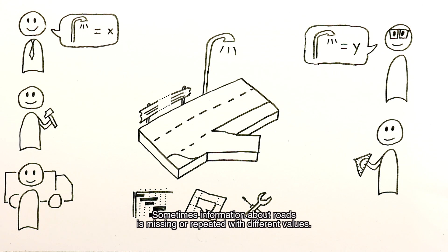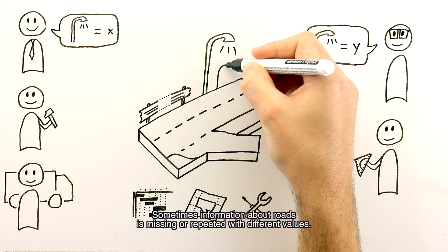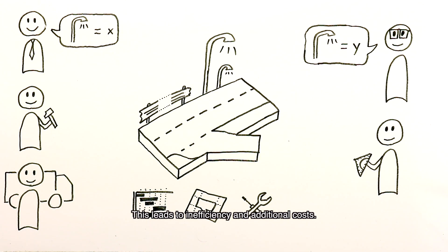Sometimes information about roads is missing or repeated with different values. This leads to inefficiency and additional costs.